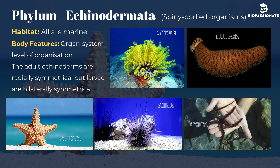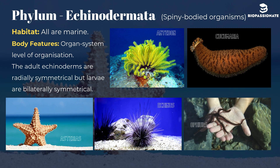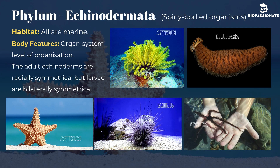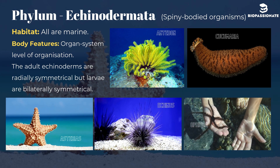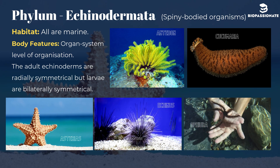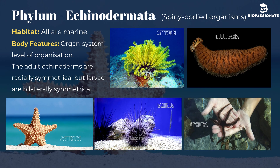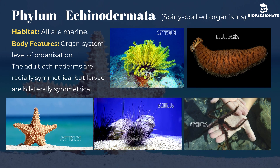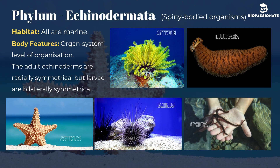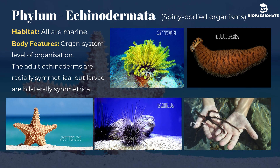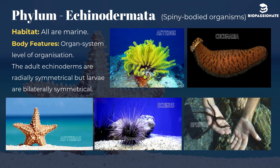Phylum Echinodermata, commonly known as spiny-bodied organisms. All are marine. Body shows organ system level of organization. Adult echinoderms are radially symmetrical, but larvae are bilaterally symmetrical. Common examples are Asterias (starfish), Echinus (sea urchin), Antedon (sea lily), Cucumaria (sea cucumber), and Ophiura (brittle star).